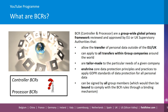BCRs are tailor-made to the particular needs of a given company and they enshrine core data protection principles and practices to apply GDPR standards of data protection for personal data. They can be signed by all group members, which would then be bound to comply with the BCR rules created by a binding inter-group agreement. There are two different types of BCRs: controller and processor. Controller BCRs are for data transfers from EU-established controllers to other controllers or to processors within the group who are established outside of the EU. Processor BCRs apply where group members transfer personal data as processors and sub-processors for an external non-group controller.